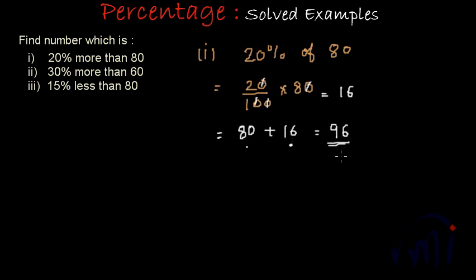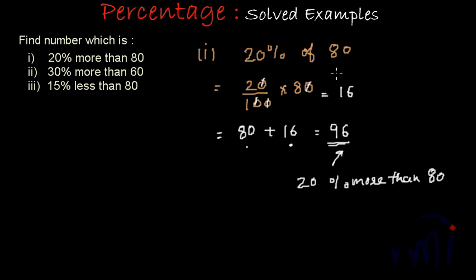This new number, 80 plus 16, equals 96 — this is the number which is 20% more than 80. So that was the step-by-step method: first we found 20% of 80, which was 16, then added it to 80 to get 96. Now I am going to solve it using the shortcut.